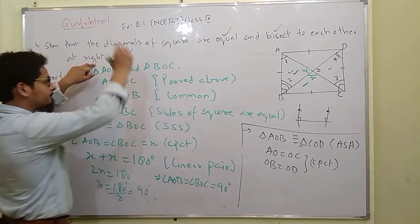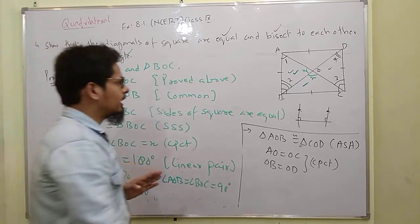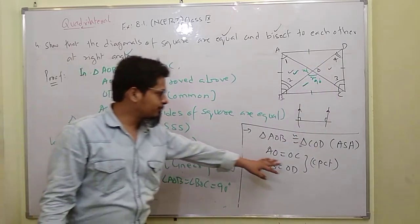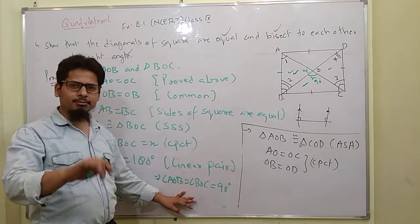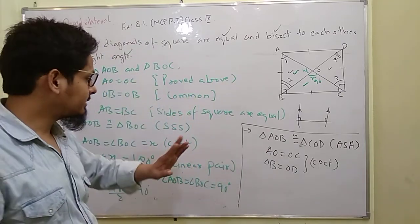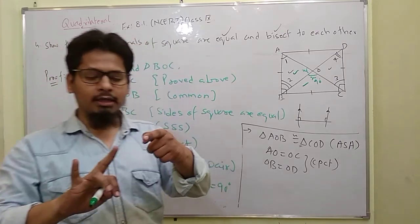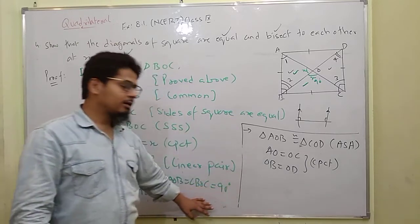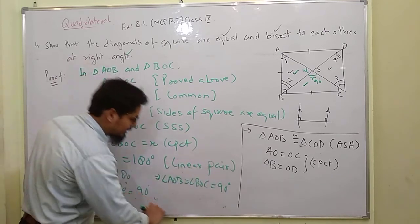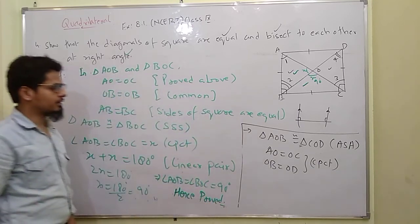This point has been proved — diagonals intersect each other at right angles. So the second point was proved, and now the third point has been proved. We have proved: diagonals are equal, they bisect each other, and they intersect at 90 degrees. All three things have been proved. Hence proved. Question over.